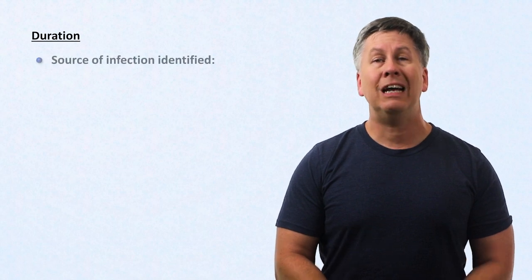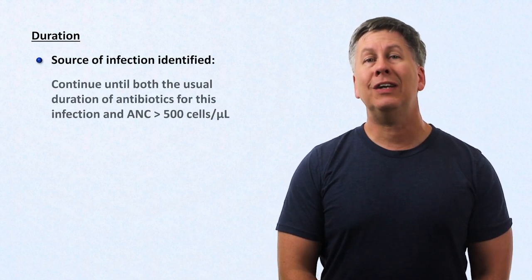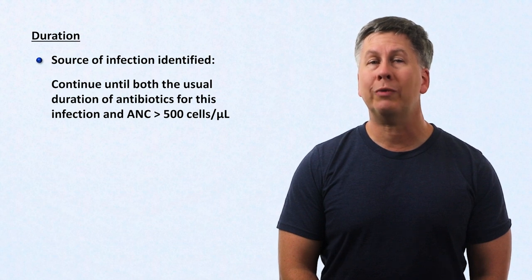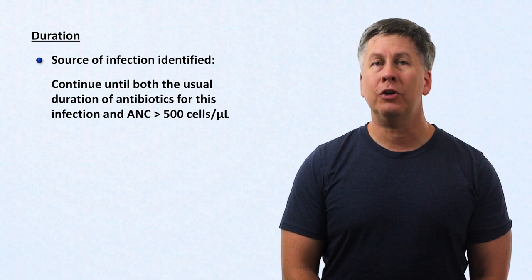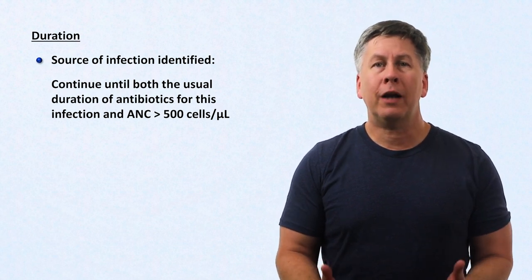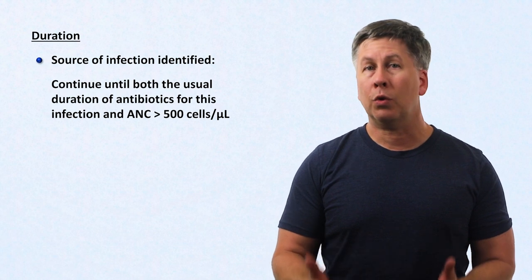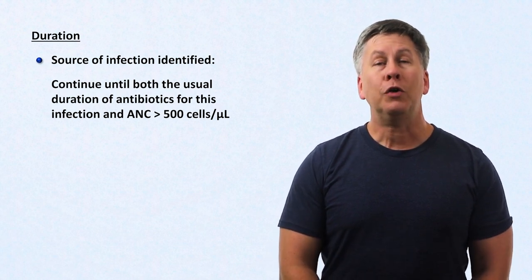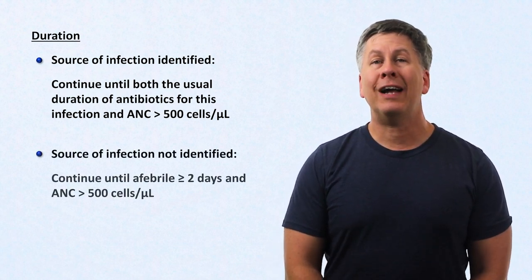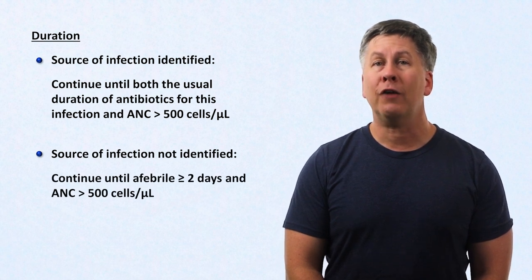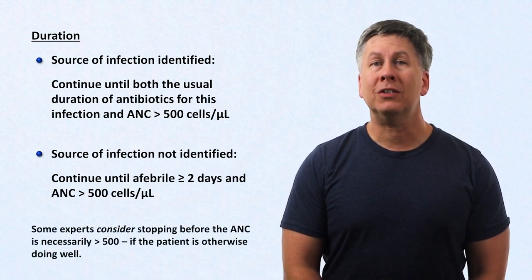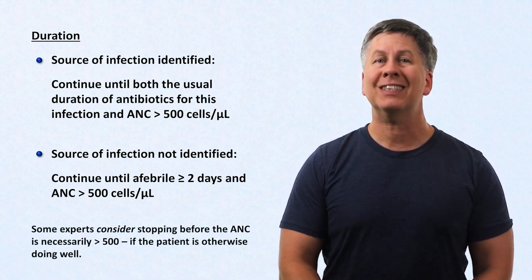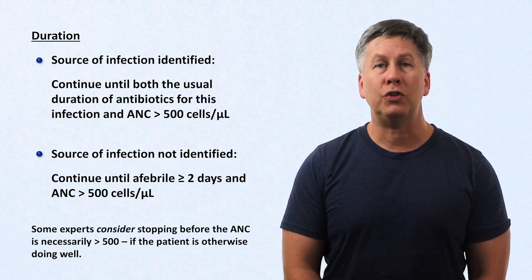Regarding the duration of antibiotics in neutropenic fever: if the source of infection is identified, continue until completing the usual duration of antibiotics for that infection and until the ANC is above 500, with the regimen tailored to the identified microorganism. If the source is not identified, continue antibiotics until the patient is afebrile for at least 2 days and the ANC is above 500, although some experts consider stopping before the ANC is necessarily above 500 if the patient is otherwise doing well.